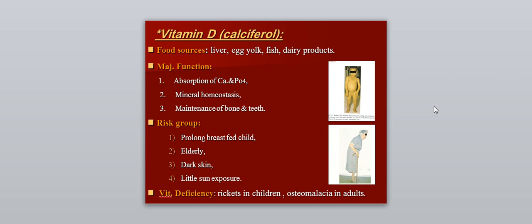Vitamin D, also called calciferol. Food sources include liver, egg yolk, fish, and dairy products. The major function is absorption of calcium and phosphate, mineral homeostasis, maintenance of bone and teeth, and growth. The risk group includes prolonged breastfeeding children, the elderly, those with dark skin, and those with little sun exposure. Vitamin D deficiency causes rickets in children and osteomalacia in adults.